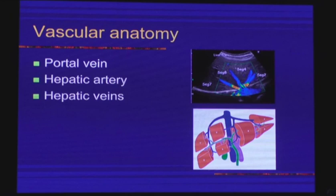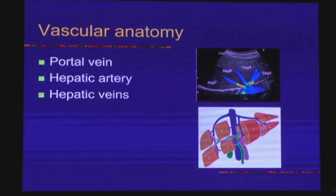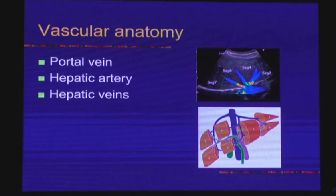The hepatic veins take blood away from the liver and run cranially, while portal veins run transversely. So if we want to image portal veins, we have to place our probe in the transverse manner. But if we want to image hepatic veins, they run in a craniocaudal manner, so we have to tilt our probe craniocaudally. The hepatic veins drain into the IVC.